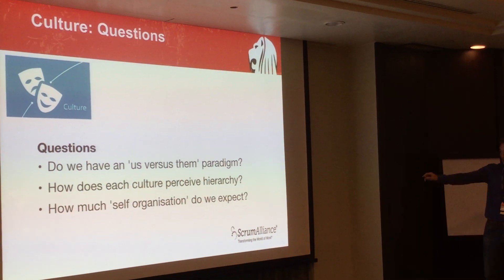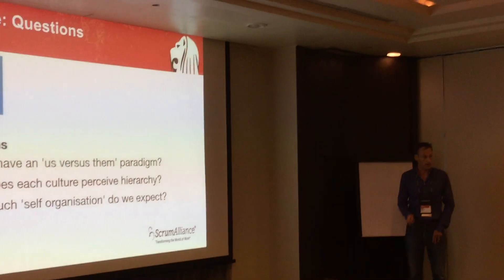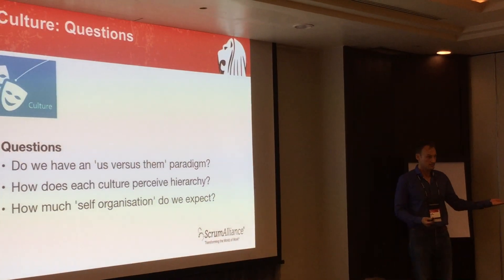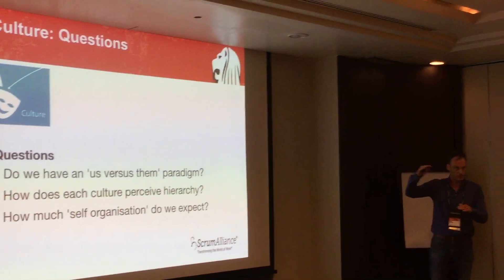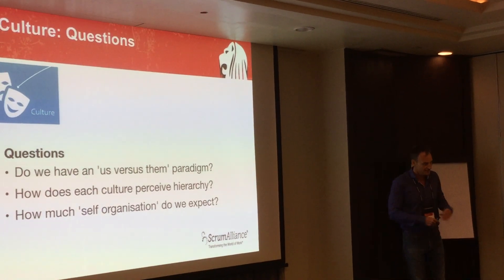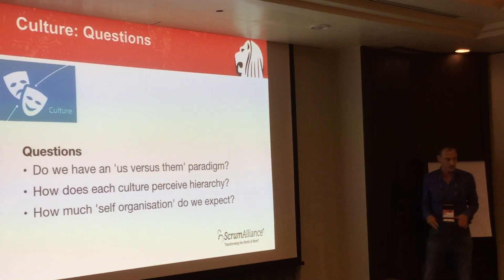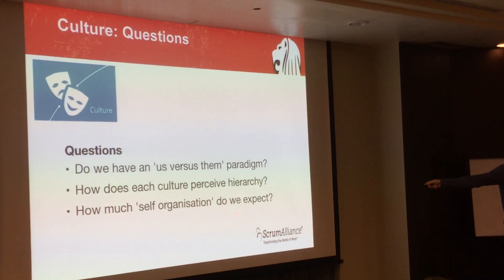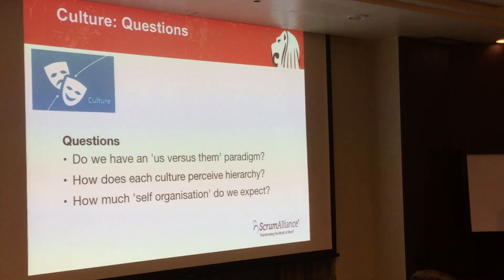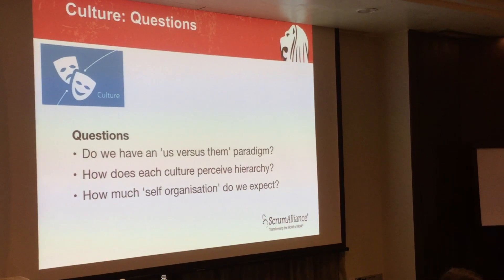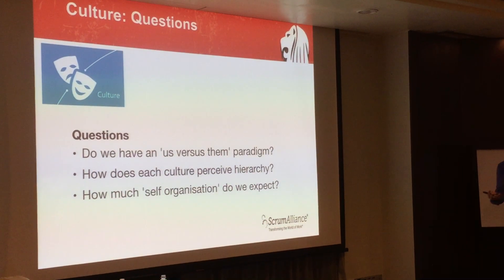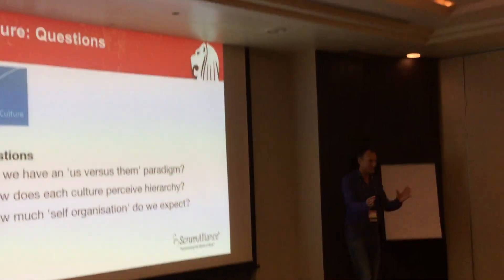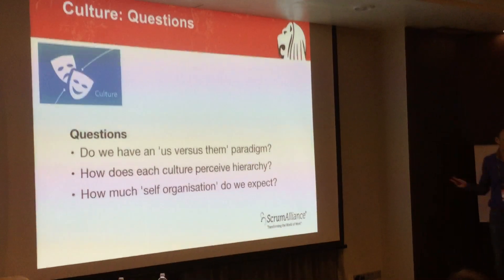Some of the questions we define within the culture bubble: Do we have an us-versus-them paradigm, which we just discussed? How does each culture perceive hierarchy? That's also a big thing — Singapore, for example, is a lot more hierarchical than Holland. If you look at the Hofstede model, Singapore is probably around 60 and Holland is about 35, so there's a huge difference in how we perceive hierarchy. And then: how much self-organization do we expect? Agility is all about self-organization, but it's not natural to all cultures — it's more natural to some and less to others.